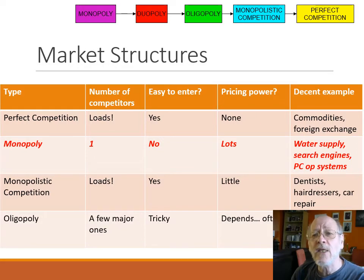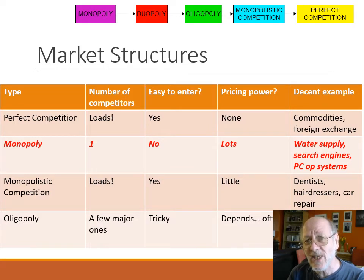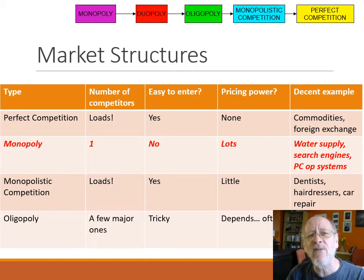Other examples would be search engines — not such a good example, but I'm willing to bet that most of you automatically default to Google as your primary search engine. Similarly, PC operating systems: if you're watching this on a PC, I bet you're watching it via Windows. So, good examples of monopoly.